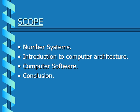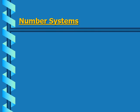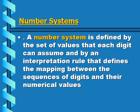A number system is defined by the set of values that each digit can assume, and by an interpretation rule that defines the mapping between the sequences of digits and their numerical values. The three key things to emphasize are: the set of values, the interpretation rule, and the mapping between sequences.